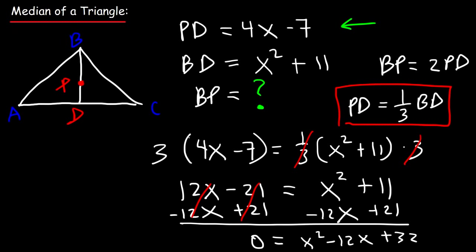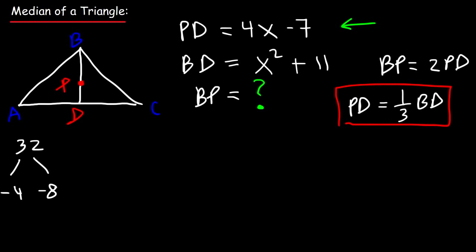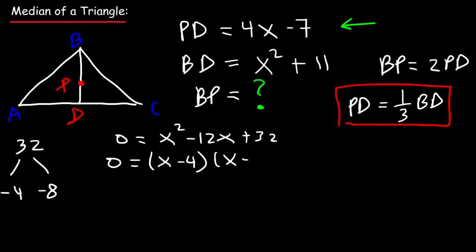Factoring x squared minus 12x plus 32 gives (x minus 4)(x minus 8), so there are two possible values: x equals 4 or x equals 8.